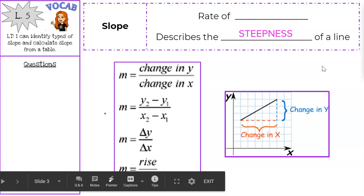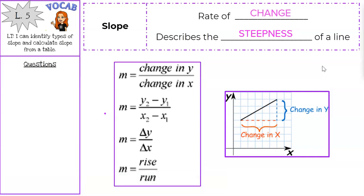First off, some vocab. Slope is our rate of change and it describes the steepness of a line. So think about mountains. How steep are they? Hills? Are they at a steep incline or not?